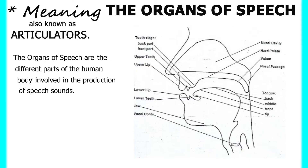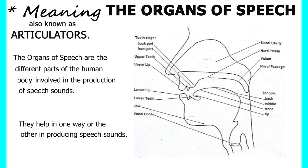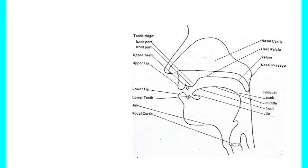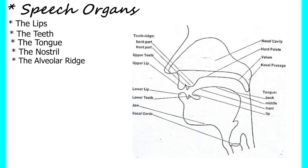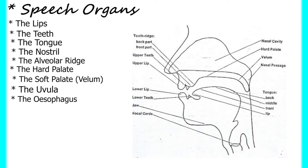They are also known as articulators. They help in one way or another in producing speech sounds. The speech sounds could be sounds of the English language or our native languages. Now, the lips alone do not produce speech sounds — we have different organs of speech. These include the lips, teeth, tongue, nostril, alveolar ridge, hard palate, soft palate (also known as the velum), uvula, esophagus, glottis,